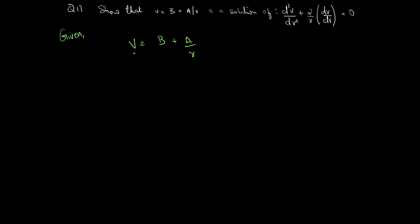Here, v is the dependent variable and r is the independent variable. We have two arbitrary constants a and b. We need to eliminate these two constants by differentiating with respect to r.